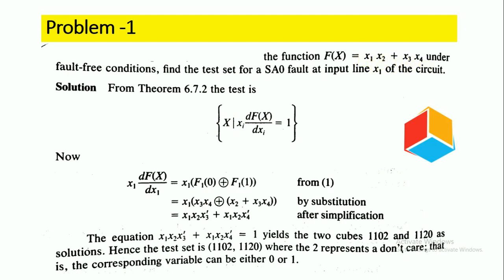From the derivation of the Boolean Difference Method, we have the equation: xi · (df(x)/dxi) = 1. This is the equation derived for stuck-at-0 fault. Here, xi represents the fault input line. In this problem, the fault input line is x1, so xi is x1.